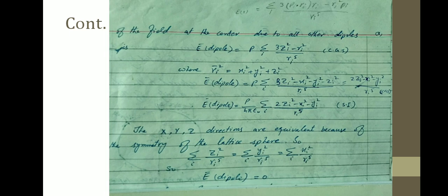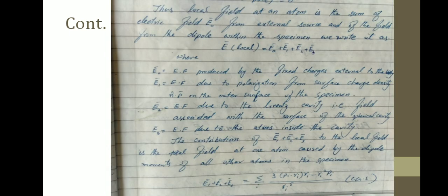In the SI system, the x, y, and z directions are equivalent because of the symmetry of the lattice sphere, so the three components of the electric field in x, y, z cancel each other. Thus, the local field at an atom is the sum of the electric field E-naught from the external source and the fields from dipoles within the specimen. We write it as E_local = E-naught + E1 + E2 + E3, where E-naught is the electric field produced by fixed charges external to the body.